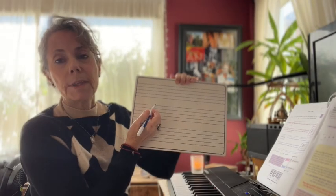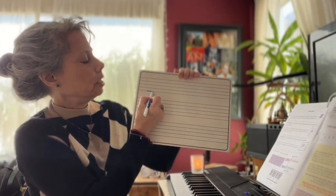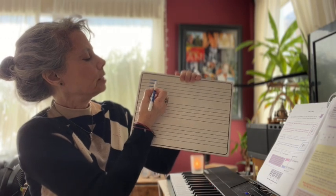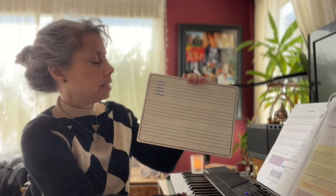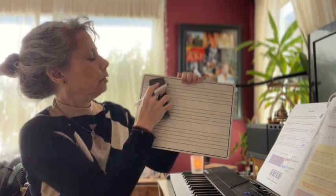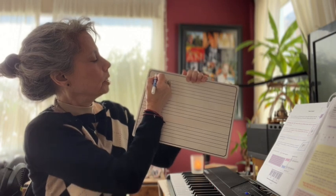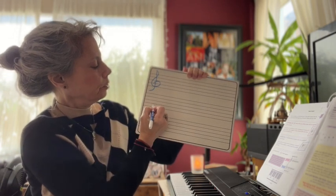Let's talk about what the staff is. The staff is five lines and the four spaces in between them. There are two staves in piano. There is the treble staff and there's the bass staff.